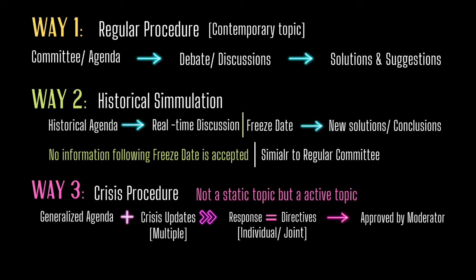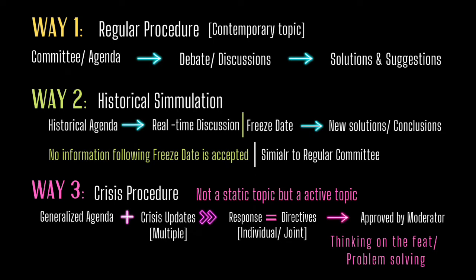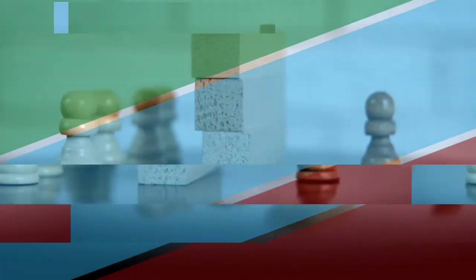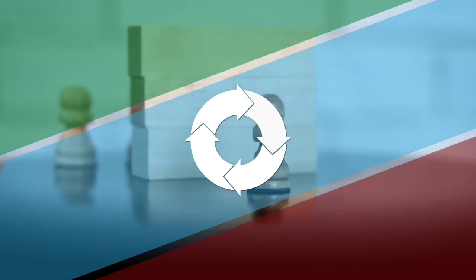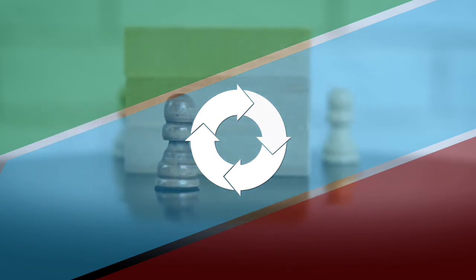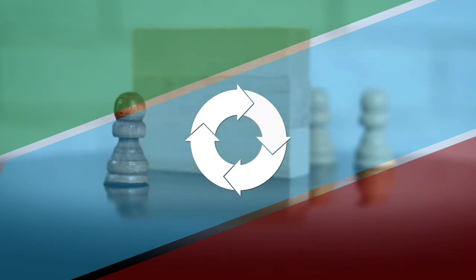The entire committee can also come together to pass a single directive, but in this case the document will be put to a vote. The crisis updates in these committees are fixed to situations inspired by real-world events. These committees primarily aim to enhance participants' thinking speed and problem-solving capacities, where participants are expected to make compromises, deals, and negotiations while simultaneously anticipating possible backlash from their directives. It is important to note that these three ways are often mixed and matched — a crisis committee can have a historical agenda with a freeze date, or a regular committee can have a crisis situation. Some committees can also have a fictional agenda but allow the procedure of regular committee proceedings.